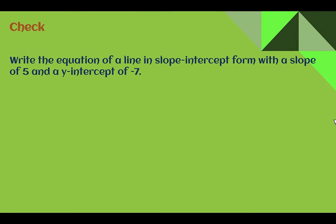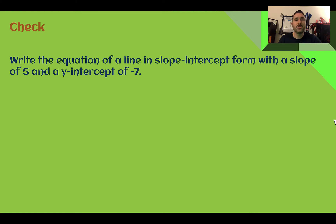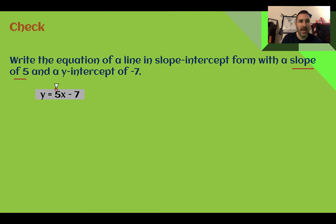Check your understanding: write the equation in slope-intercept form with the given slope and y-intercept. You should have put y equals five x minus seven. Slope was five — that's where m goes. And the y-intercept is at the end: b was minus seven. So five x minus seven.